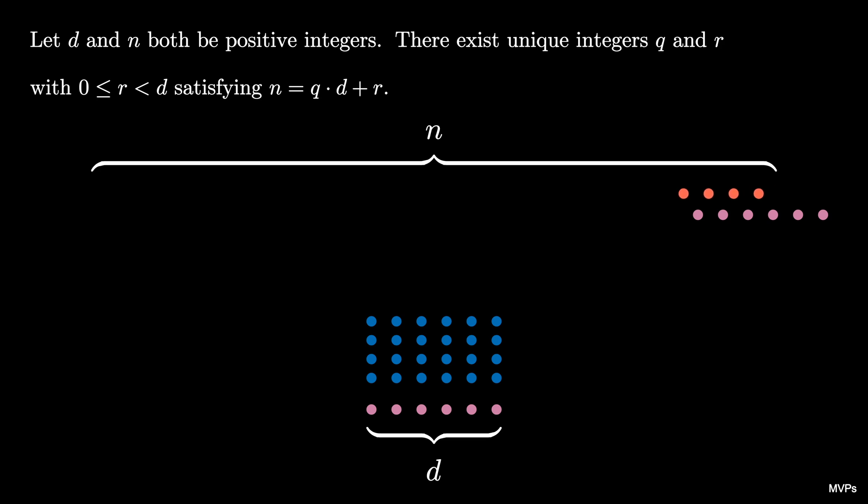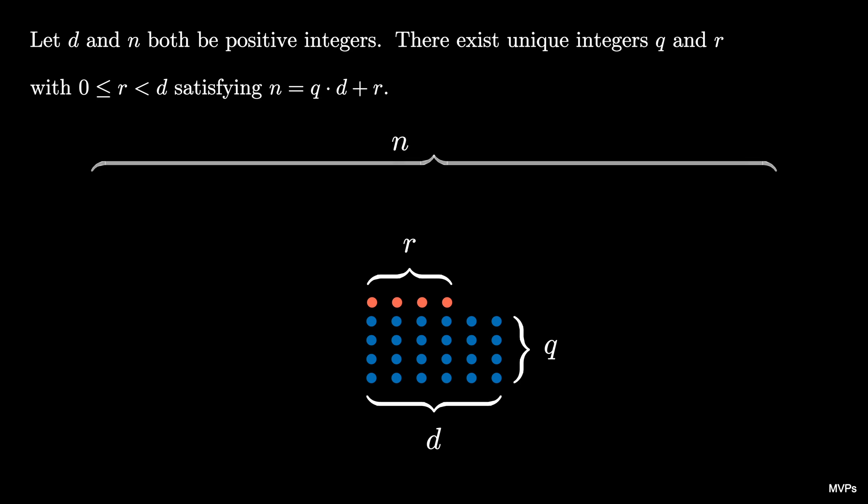This is going to be the value of r. As we see in the diagram we have arranged the n dots into a d by q array with r dots left over and a line on top. This means that n equals q times d plus a remainder of r.